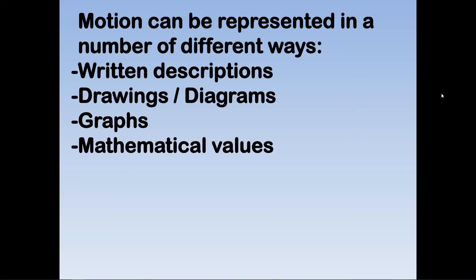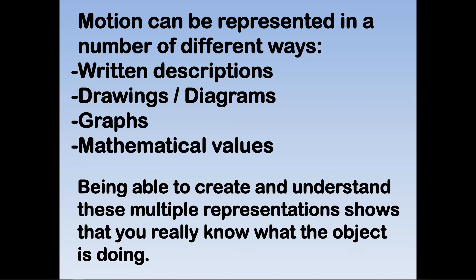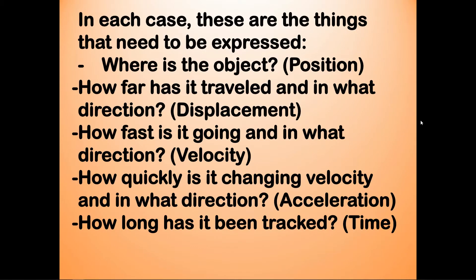Motion can be represented in a few different ways: written descriptions, drawings, diagrams, graphs, and mathematical values. On an exam, if someone really wants to assess whether you understand the motion of an object, they will ask for multiple representations to make sure you truly understand what the object is doing. Examples include where the object is, how far it has traveled, in what direction, how fast it is going, how quickly it is changing velocity, and how long it has been tracked.